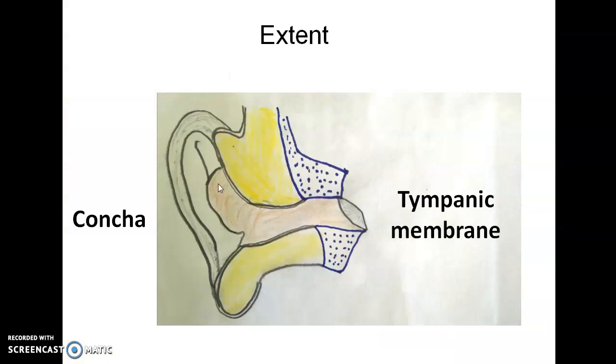The extent of the external auditory canal is from a depression in the pinna called a concha towards the eardrum or the tympanic membrane.